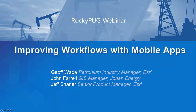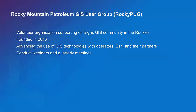Good morning, Geoff. Thank you very much. My name is John Farrell, and I am one of the founding members and still a supporting member of the Rocky Mountain Petroleum GIS User Group here in Denver, known as the Rocky Pug. We are a volunteer organization supporting the oil and gas GIS community in the Rockies, with a very devoted and highly technically proficient set of GIS professionals in Denver that work in oil and gas. This group was put together in 2016, and we intend to advance the use of GIS technologies with oil and gas operators, ESRI, and their partners. We conduct quarterly meetings and intend to conduct webinars just like this one.